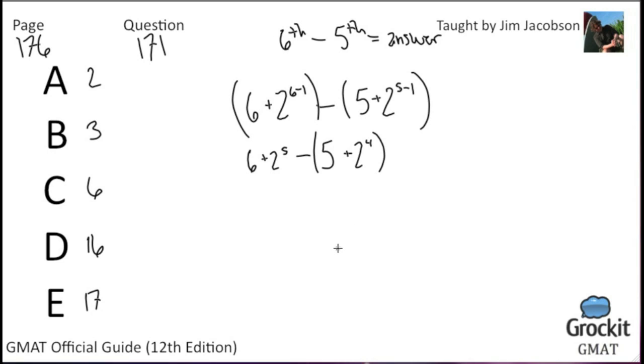And in this particular case, it's perhaps easier to think of it as... first off, we can kind of get rid of the parentheses. So 6 plus 2 to the 5th minus 5 minus 2 to the 4th. We can reorganize things here. We get 6 minus 5 plus 2 to the 5th minus 2 to the 4th. We're just putting them in a different order.